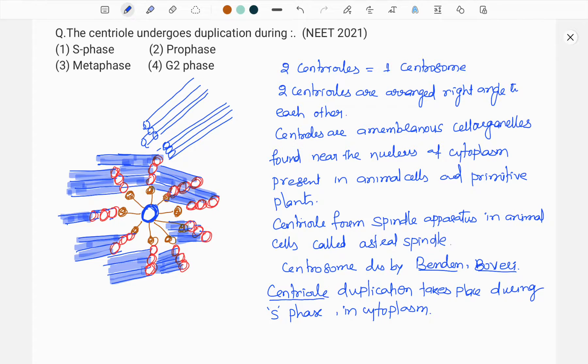Another important feature here is that initiation of cell division by arranging spindle fibers is done by centrioles. Location of centrioles during cell division decides the plane of division.